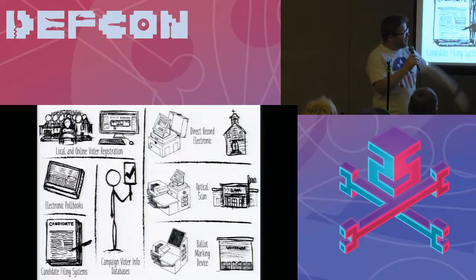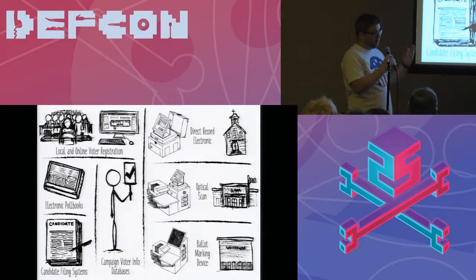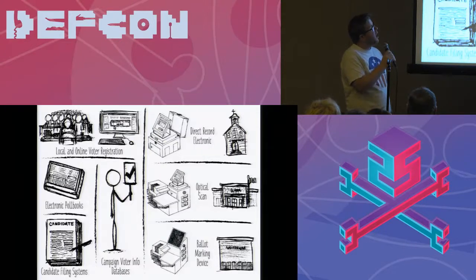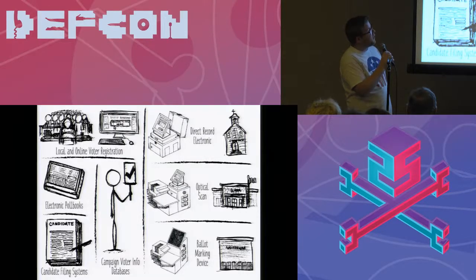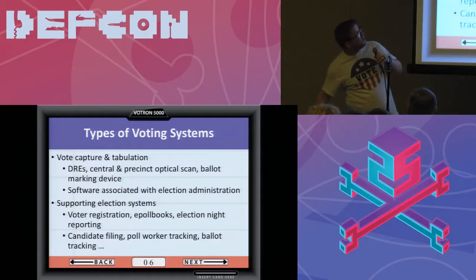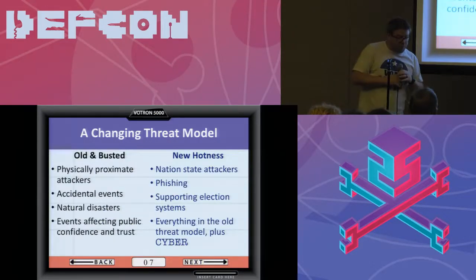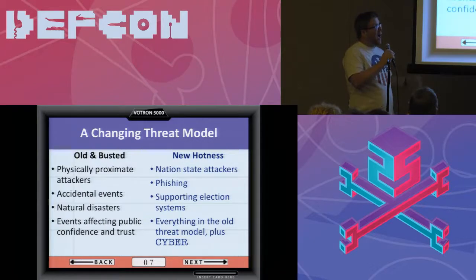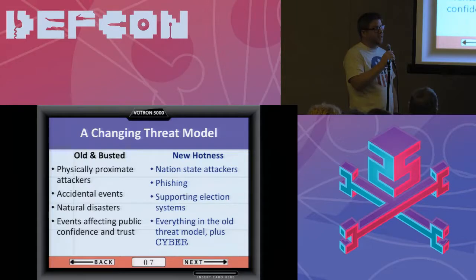There are also campaign voter information databases. These are fairly large-scale data collection efforts holding a lot of really interesting information about all of us. So when we're thinking about securing the election ecosystem, we actually need to have a larger palette. Matt Blaze is right — our whole threat model has changed since the 2016 general. Previously, election officials had a threat model about physically proximate attackers. They were extremely worried about poll workers, who are one of the nation's largest temporary workforces and aren't necessarily vetted to the degree you would want. They often have privileged system access passwords.